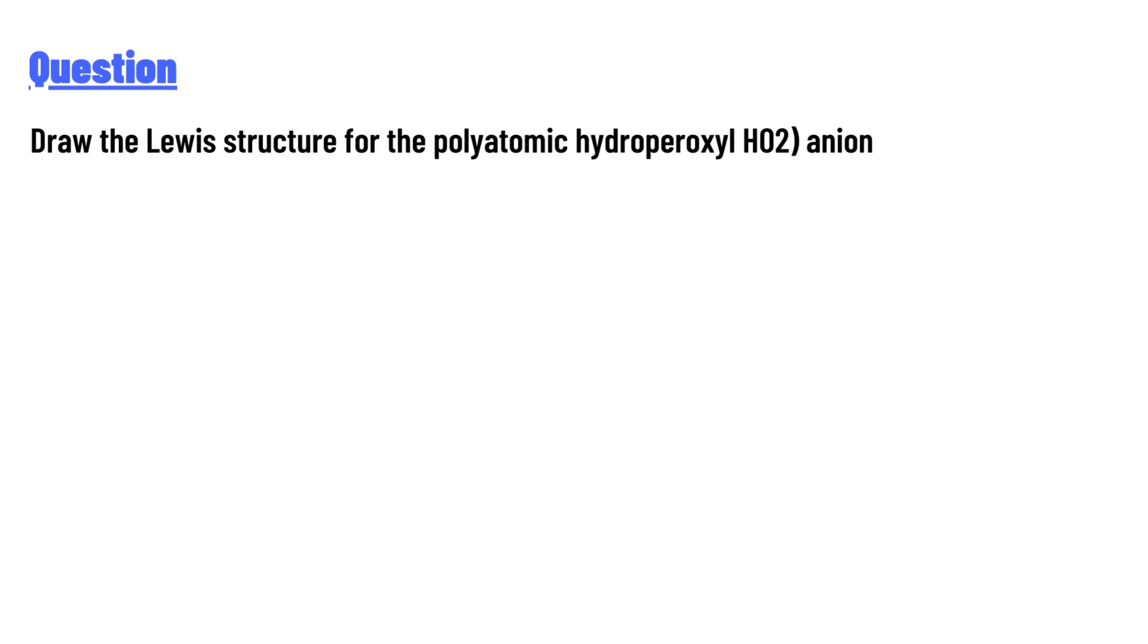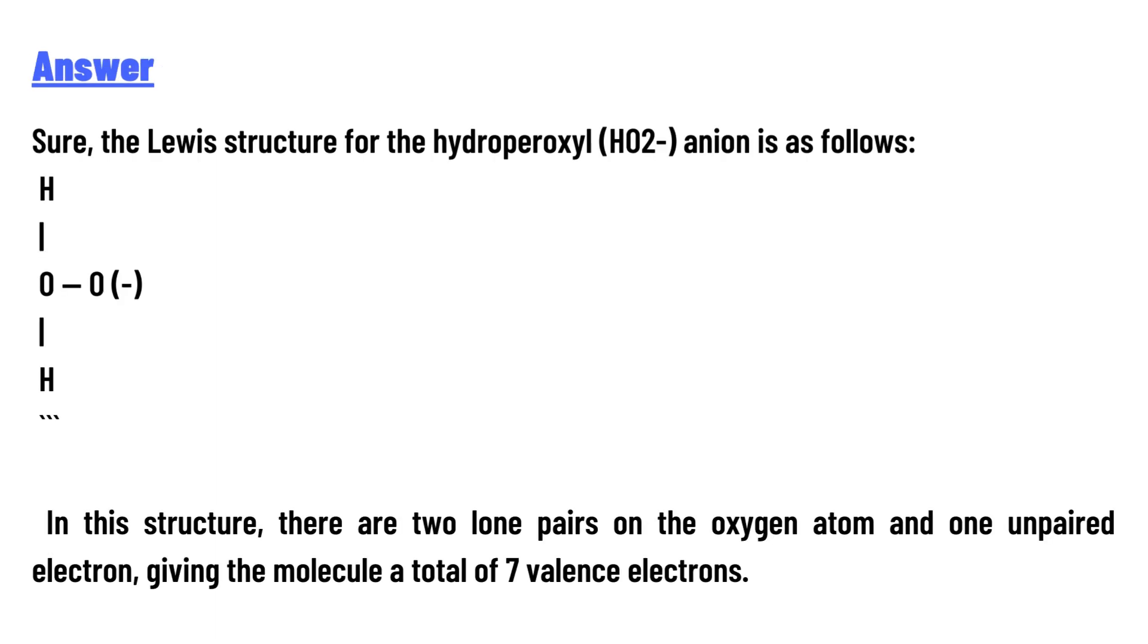And the answer of the question is: The Lewis structure for the hydroperoxyl HO2- anion is as follows. In this structure, there are two lone pairs on the oxygen atom and one unpaired electron.